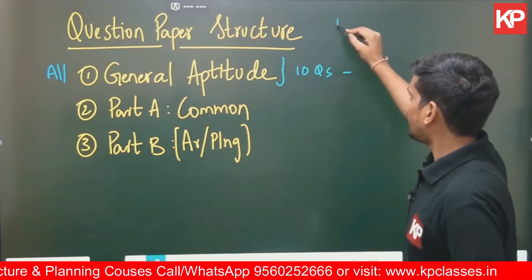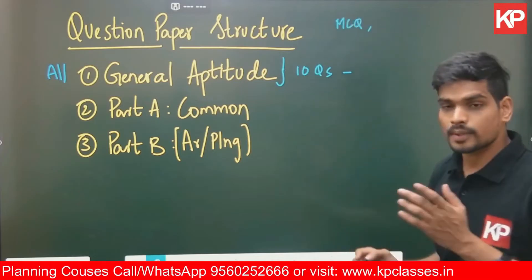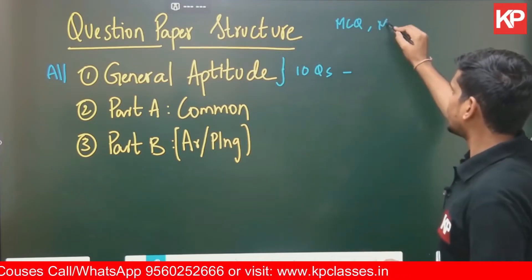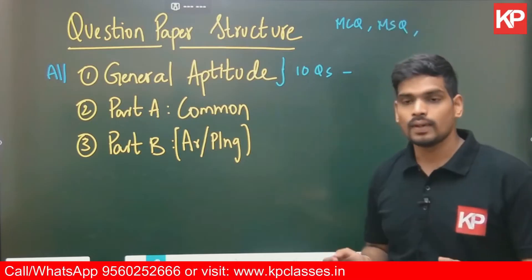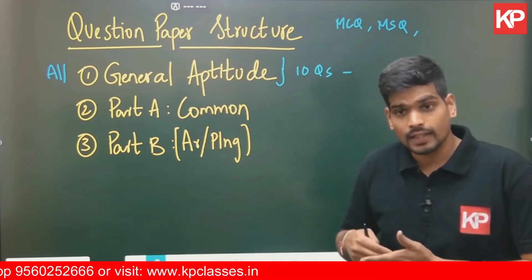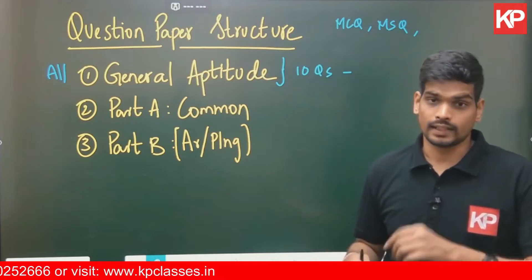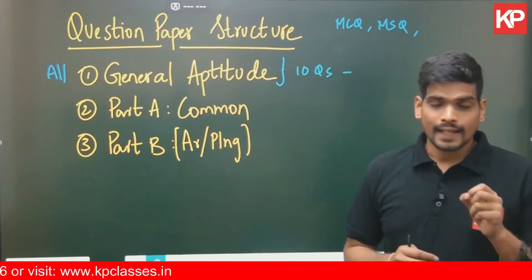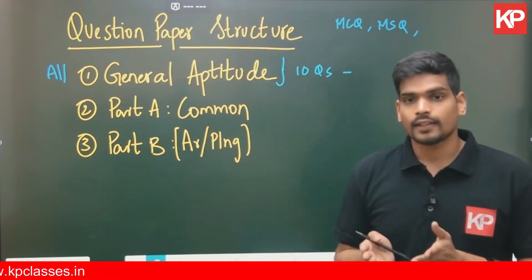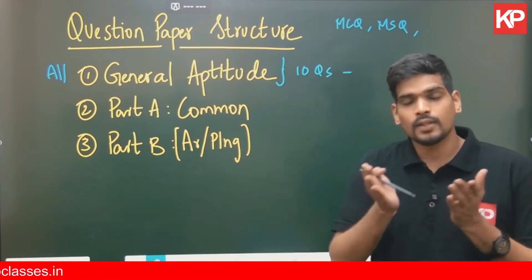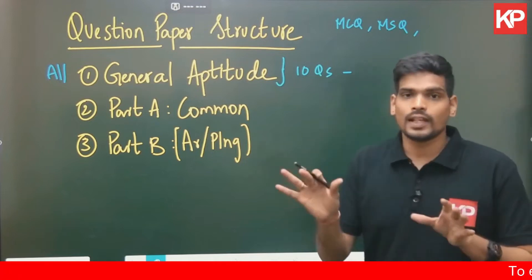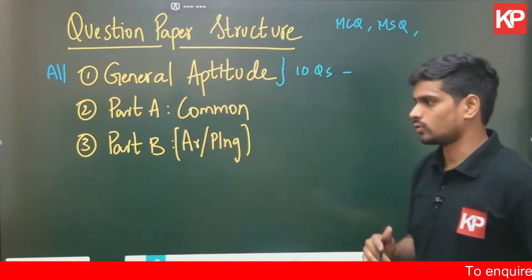There are three types of questions in the GATE question paper. First, Multiple Choice Questions where four options are given and one answer is correct. Second, Multiple Select Questions where four options are given and one, two, three, or all four options can be correct. Remember, even in MSQ there can be only one correct option — that has happened in past papers.